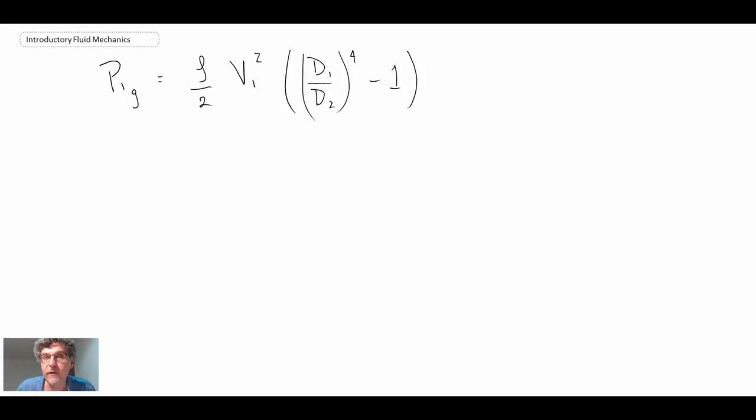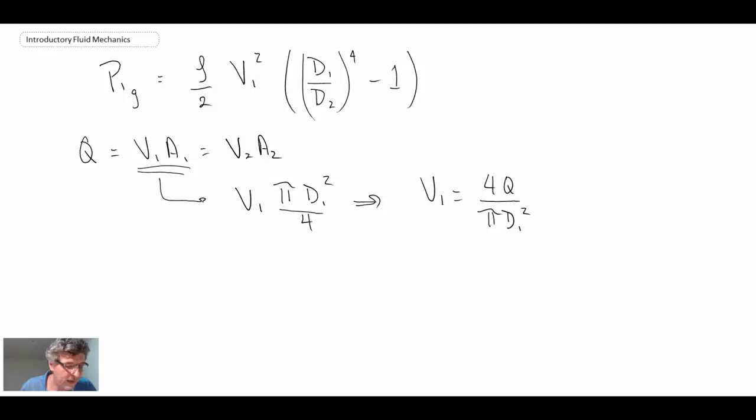We want to express this in terms of volumetric flow rate coming through the nozzle. Volumetric flow rate Q equals v1·a1, and it's also equal to v2·a2. We're going to work with v1·a1, expanding that out as v1 multiplied by the area at one. From this we can write v1 in terms of volumetric flow rate. I'm going to take this and plug it back into this equation.